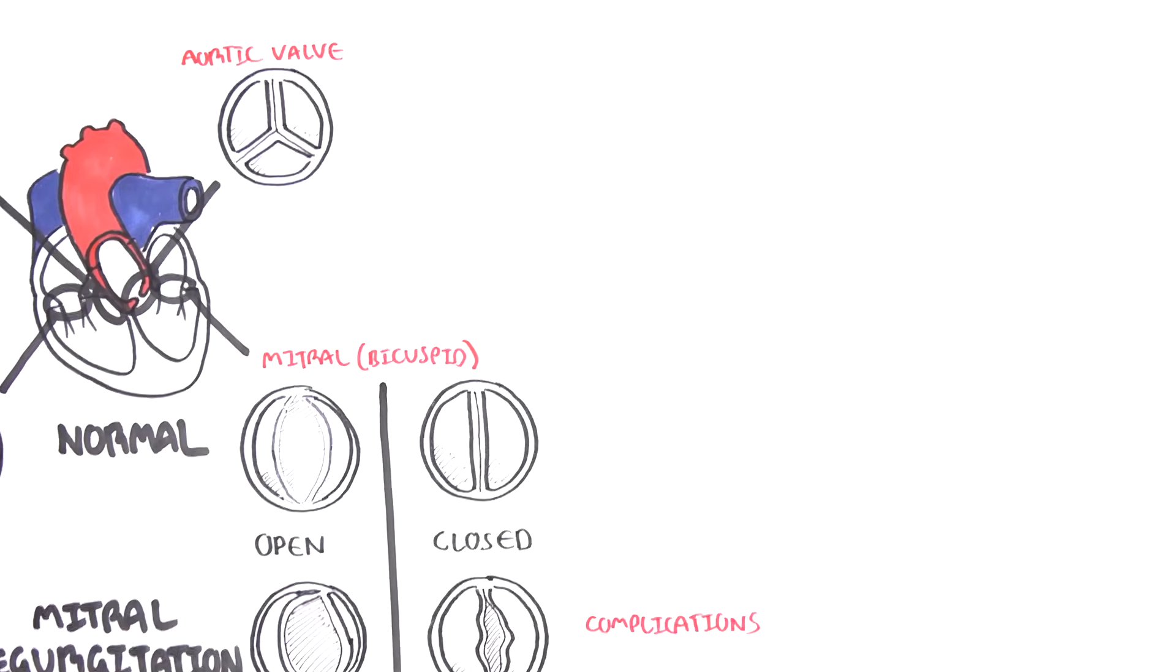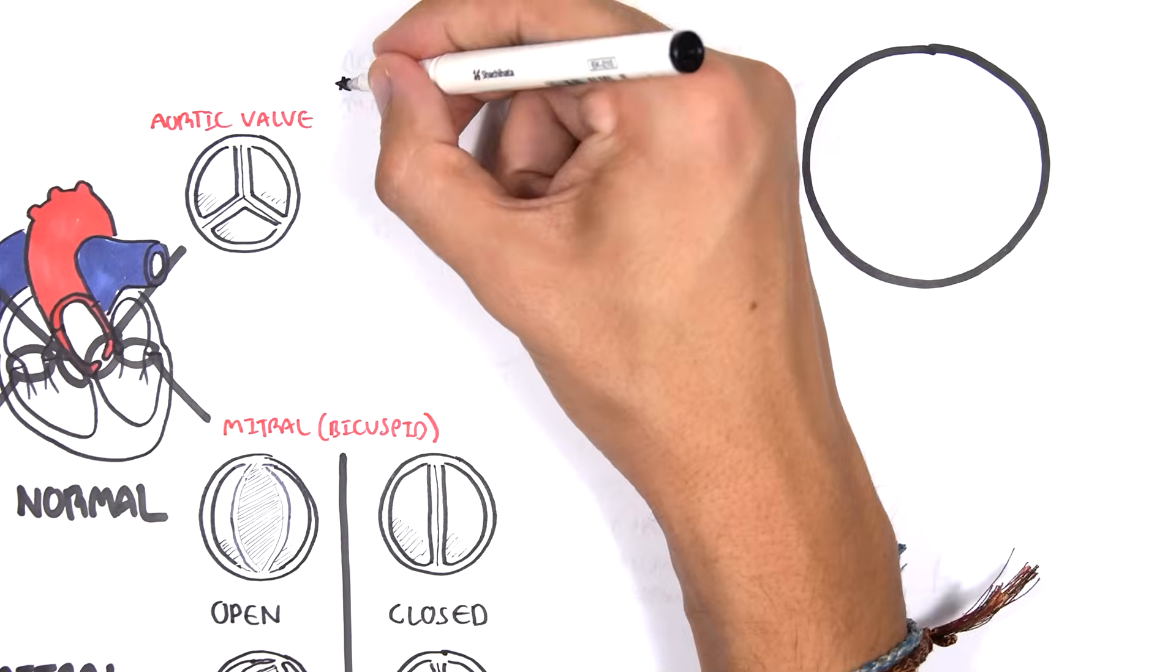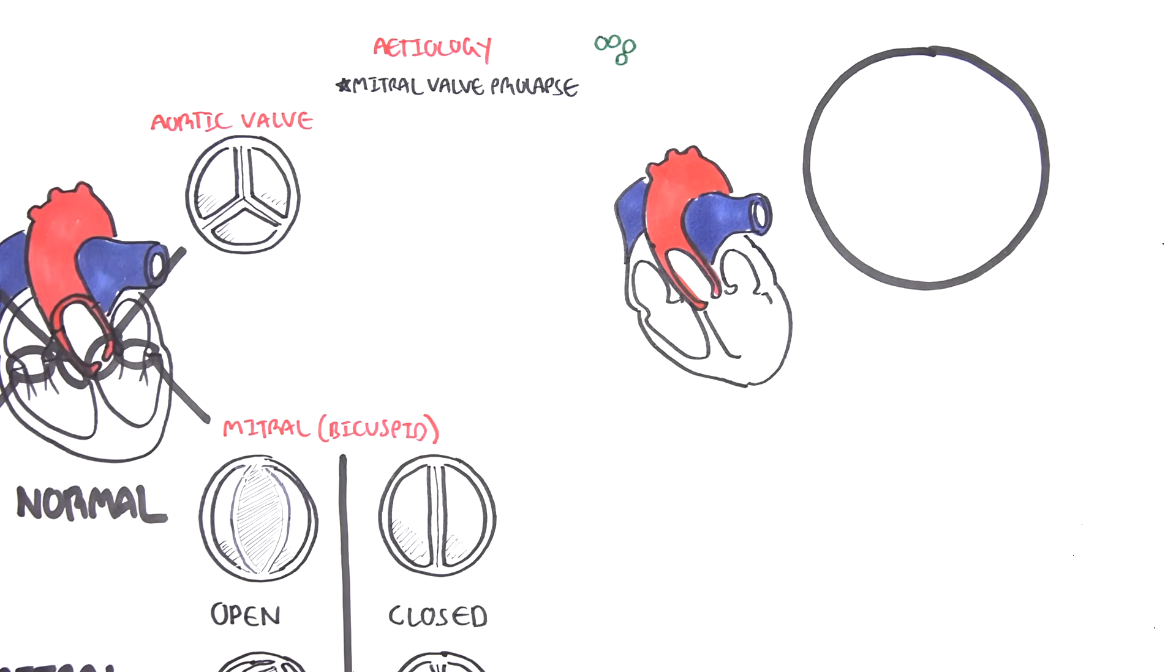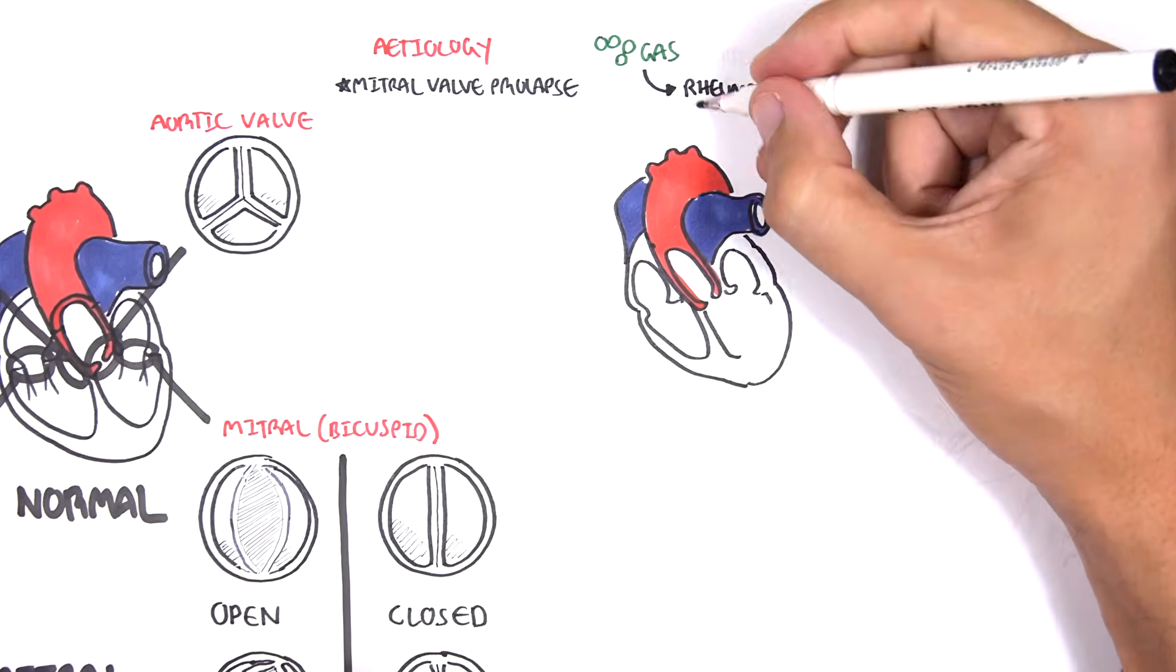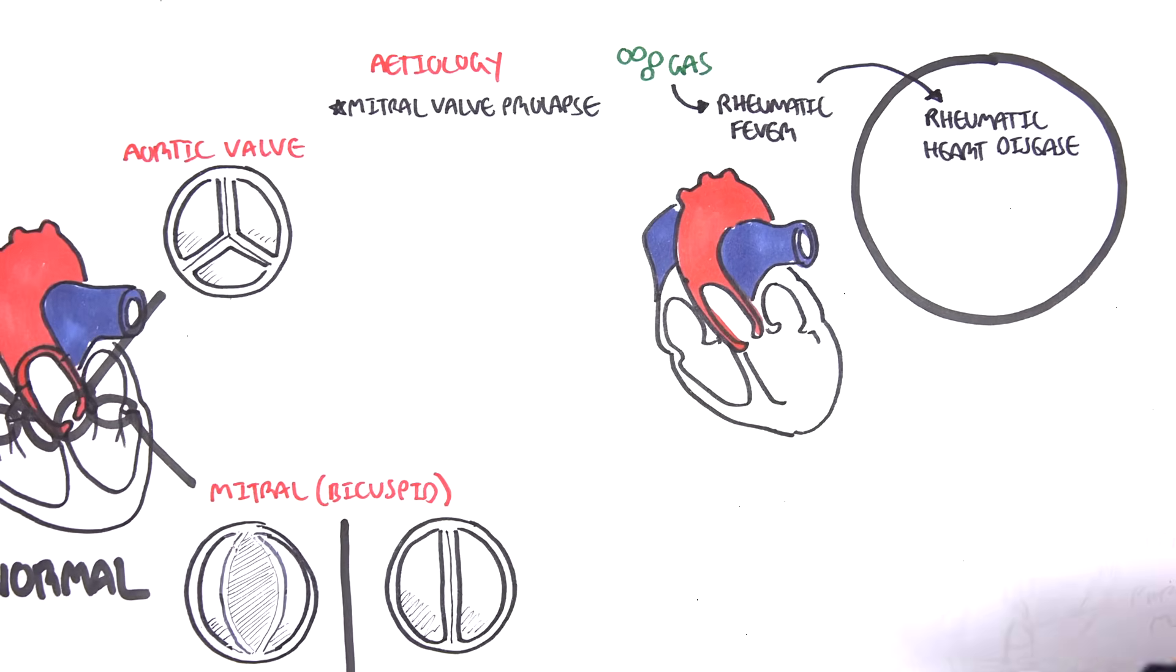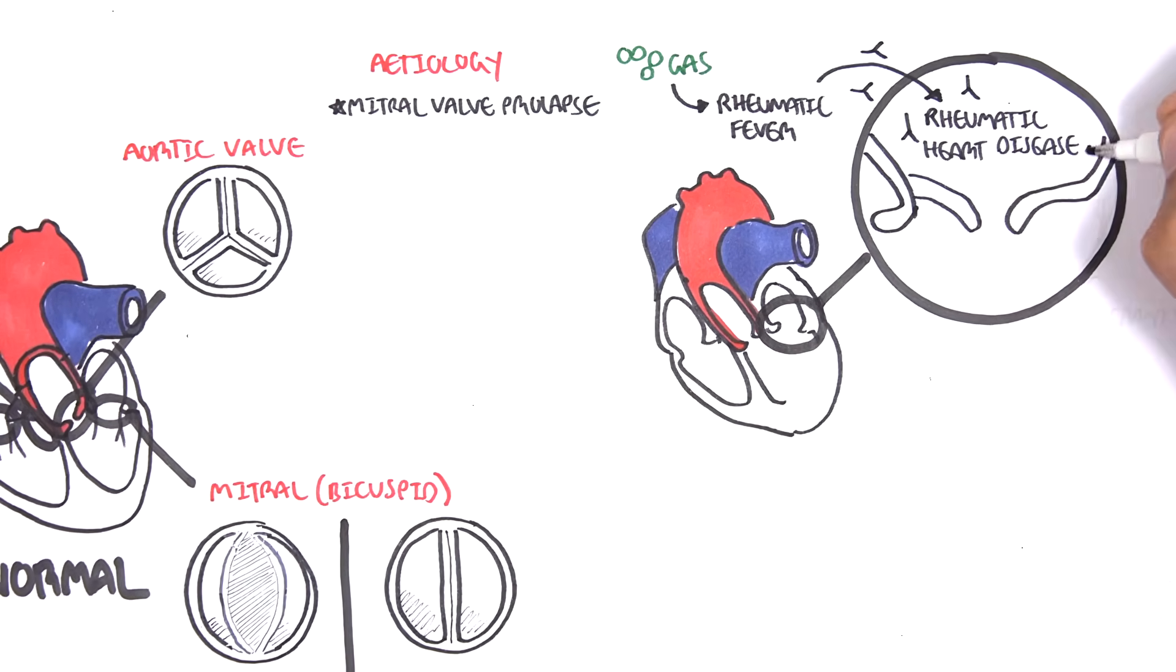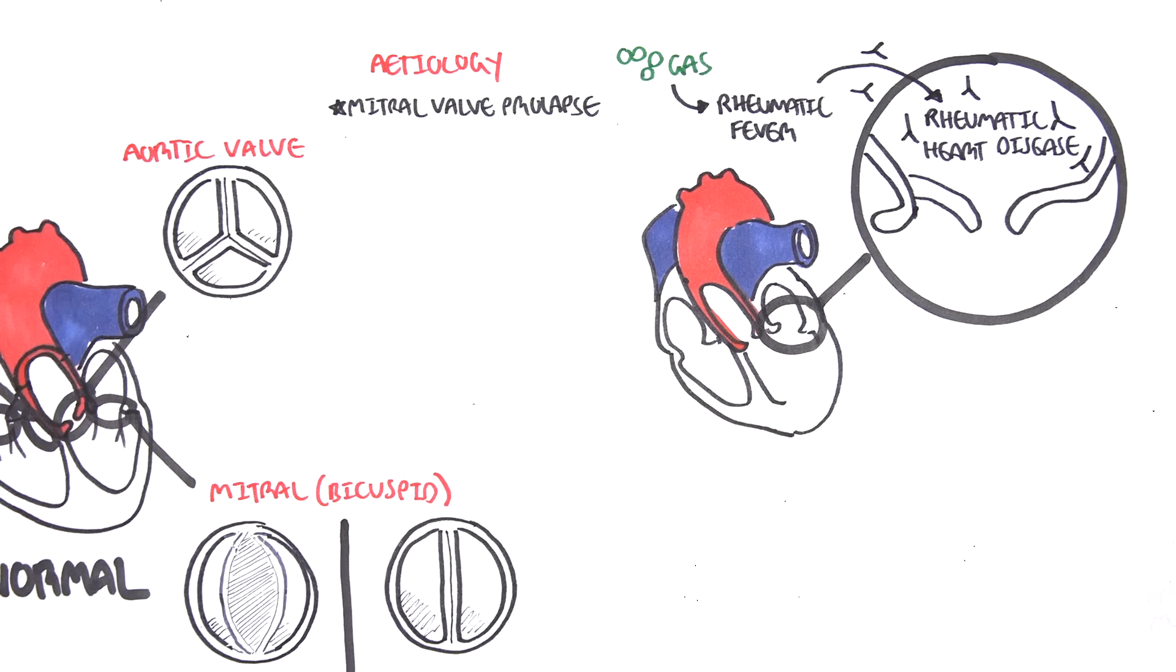The etiology of mitral regurgitation includes, most commonly, mitral valve prolapse, rheumatic heart disease, which is caused by group A streptococcus leading to rheumatic fever and then rheumatic heart disease. The fever results in the generation of antibodies which, due to molecular mimicry, also attach to the heart valves.